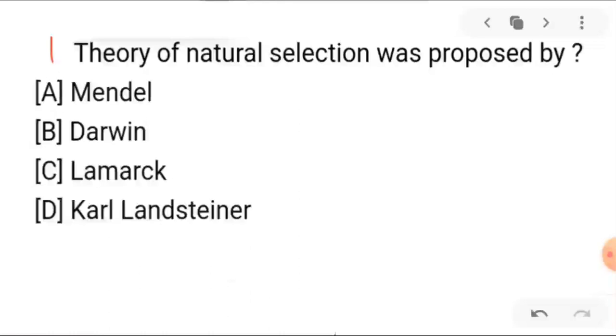The theory of natural selection — who proposed it? A is Mendel, B is Darwin, C is Lamarck, and D is Karl Linnaeus.